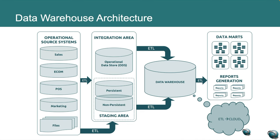The bottom tier of this architecture is the database server in the data warehouse where data is loaded and stored. The data is stored in two different ways: frequently accessed data is stored in very fast storage, while infrequently accessed data is kept in a different environment. The data warehouse automatically moves frequently accessed data to fast storage so that query speed is optimized based on usage patterns.